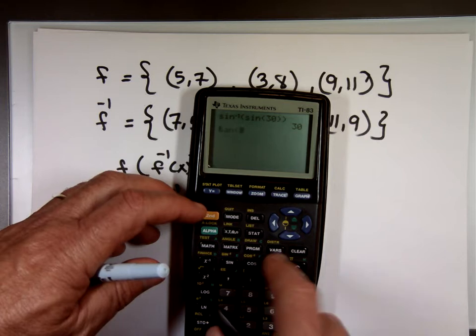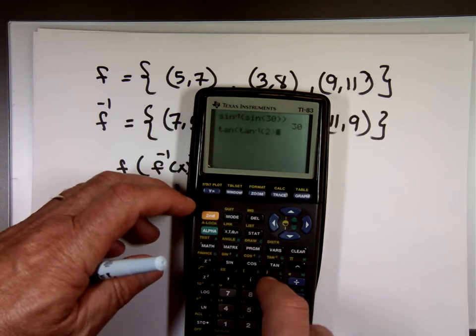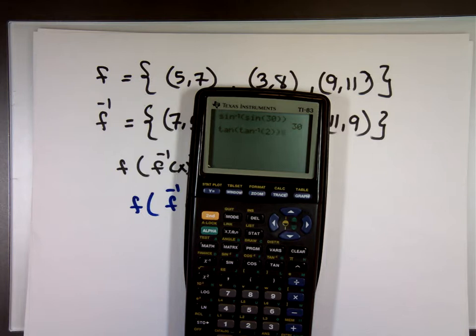What is the tangent? I'll do it backward here. Of the inverse tangent of 2. Guess what the answer is? 2. They undo each other.